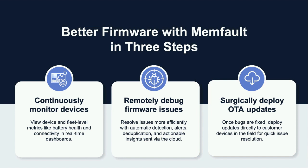Once you've identified a bug, you want to fix it and deploy the fix via OTA. But you don't want to roll it out to hundreds of thousands of devices at once. You surgically deploy — only loading new software to the most-affected devices first. Then you use observability to verify it's an improvement before rolling out to 10%, 20%, and ultimately all of your fleet. That's what Memfault offers.